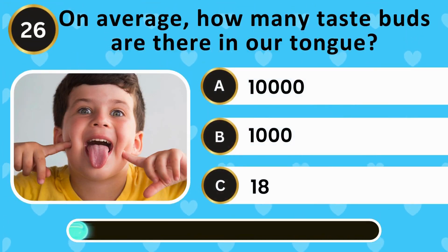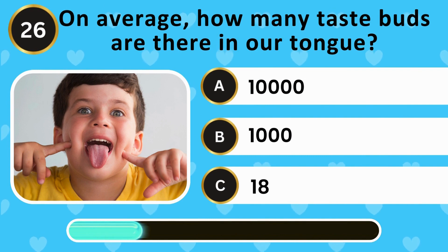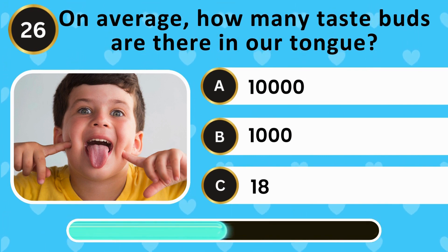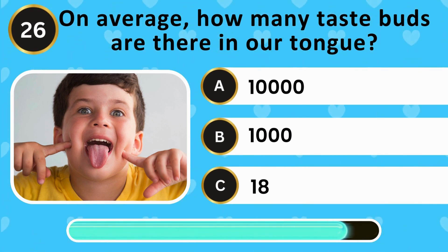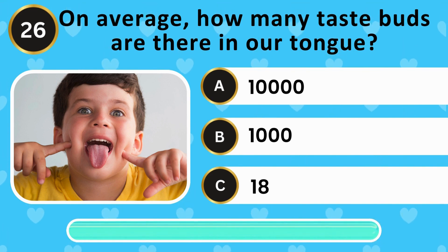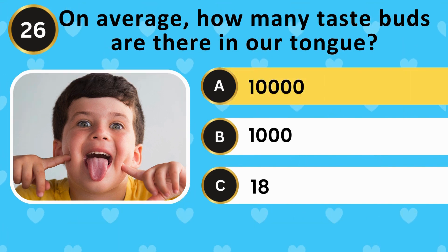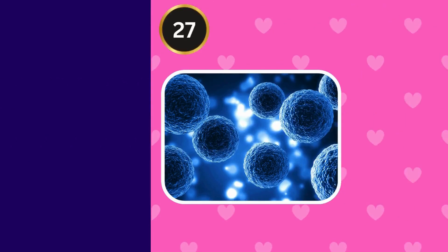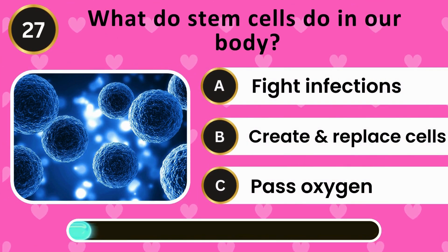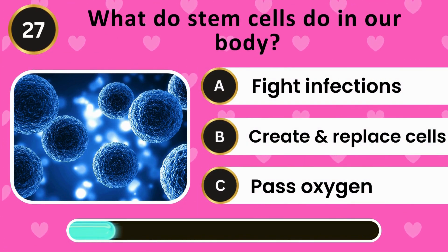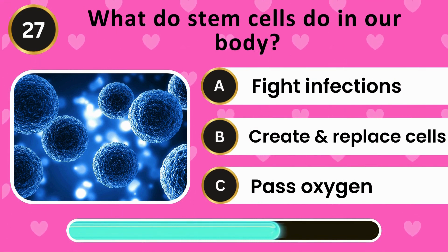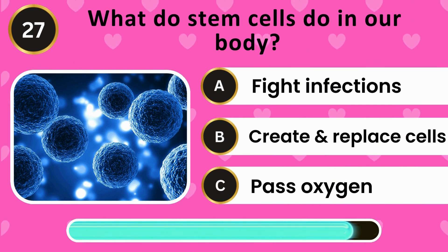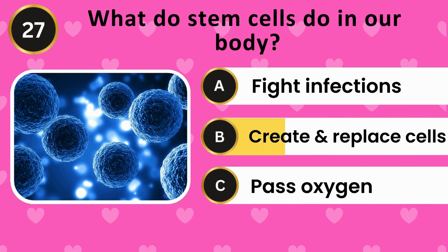On average, how many taste buds are there in our tongue? 10,000, 1,018, 10,000. The answer is 10,000. What do stem cells do in our body? Fight infections, create and replace cells, pass oxygen. The answer is create and replace cells.